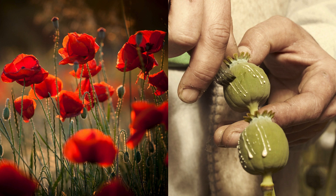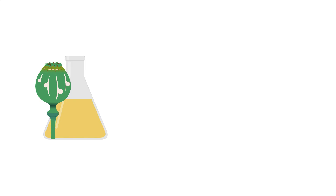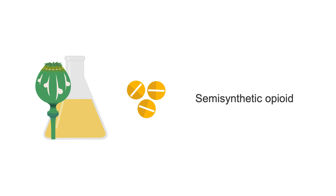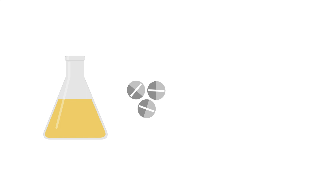Naturally occurring opiates come from the poppy plant. If you take any of those naturally occurring opiates and modify them in a lab to create a novel compound that also activates opioid receptors, you have created something that is opiate-like — this is called a semisynthetic opioid. And if you make a completely novel substance that is in no way derived from the opiates, but nonetheless activates opioid receptors, you've got yourself a synthetic opioid.